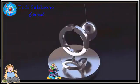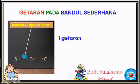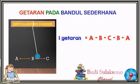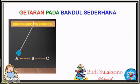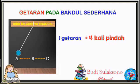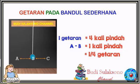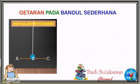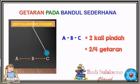Perhatikan contoh bandul yang berayun berikut ini. Sebuah bandul dikatakan melakukan satu getaran jika melakukan gerakan dari A, B, C, B, A, atau gerakan dari titik asal kembali ke titik asalnya. Satu getaran terjadi setelah bandul berpindah sebanyak 4 kali hingga kembali ke titik asalnya. Jika bandul hanya bergerak dari A ke B, berarti bandul itu hanya berpindah 1 kali, sehingga dikatakan hanya melakukan 1/4 getaran. Jika bandul bergerak dari A ke B ke C, maka bandul telah berpindah sebanyak 2 kali, sehingga dikatakan telah melakukan 2/4 getaran, atau sama dengan 1/2 getaran.